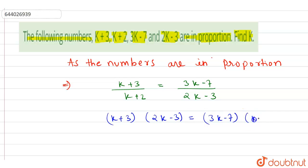So 2K² - 3K + 6K - 9 is equal to 3K² + 6K - 7K - 14.